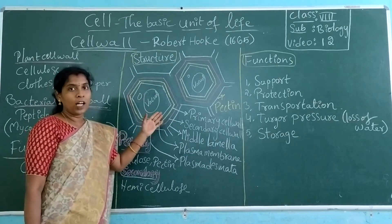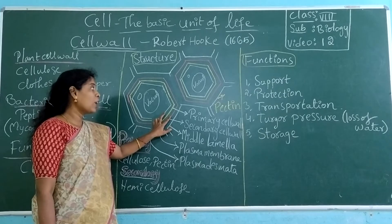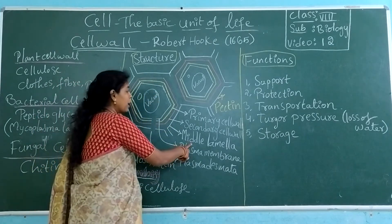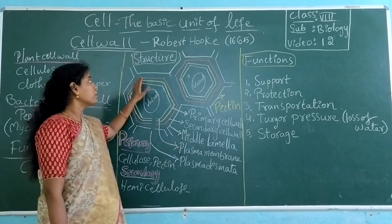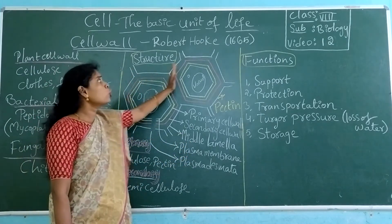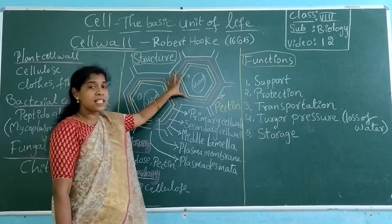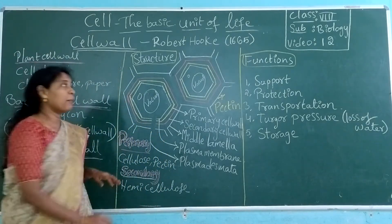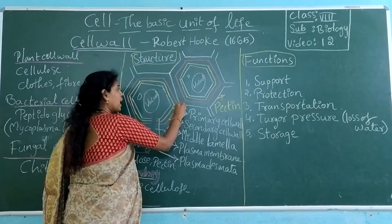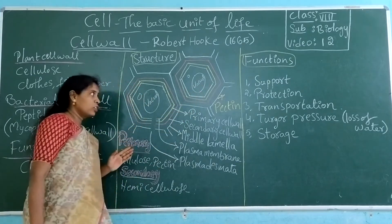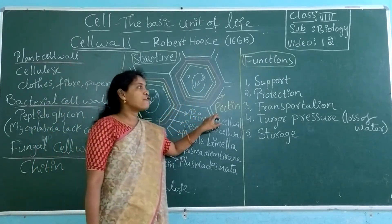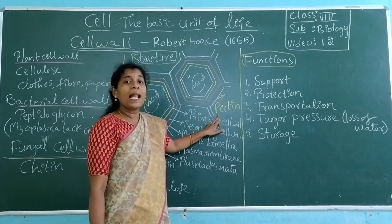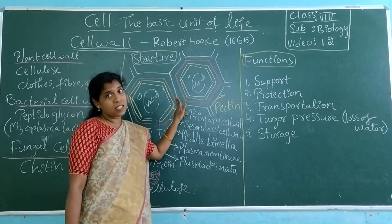What about the middle lamella? The middle lamella is present between two cells. These two cells are connected by the middle lamella. The middle lamella helps to attach both cells together, and it is made up of pectin. Pectin acts like a glue — it is sticky and helps to attach both layers.